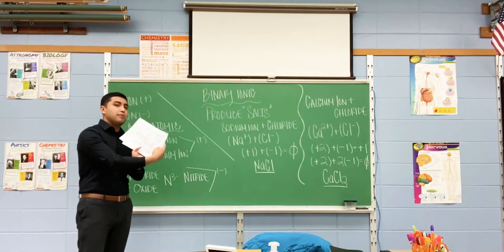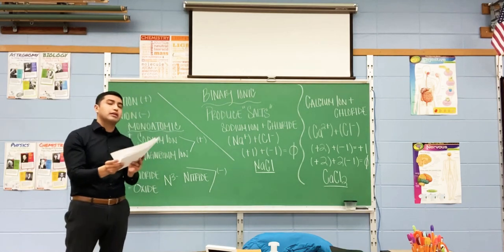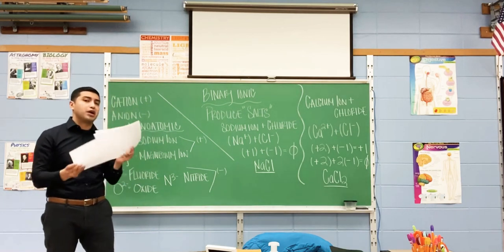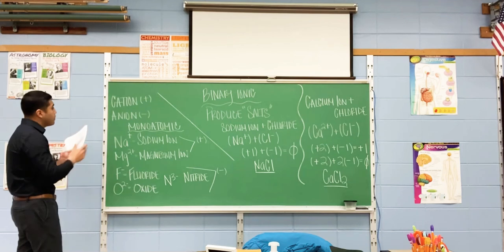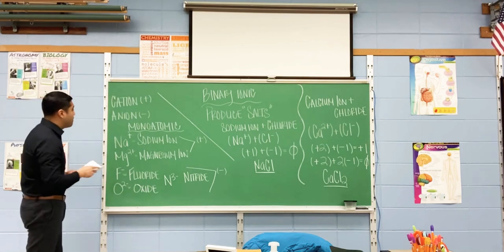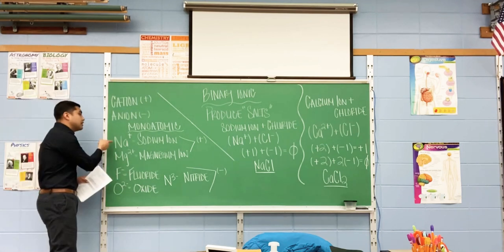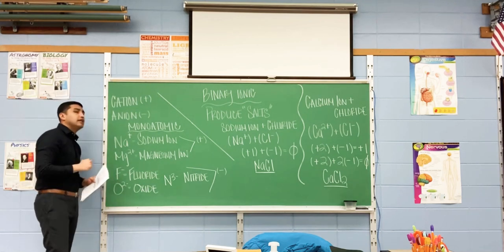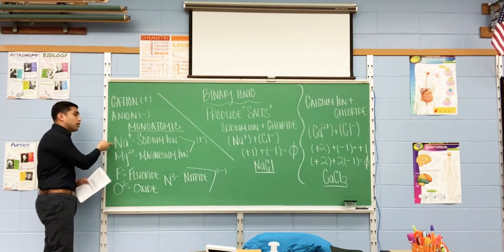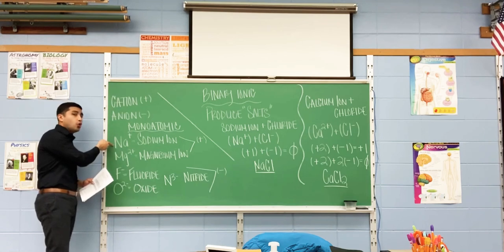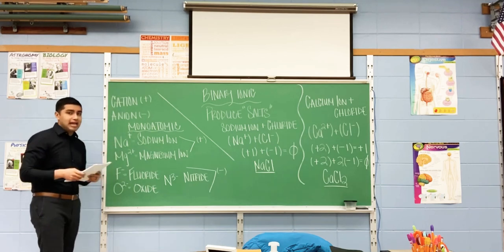Get your periodic table and the chart that has the rows on it — it's important for you to have those out. The first step is to look at the name of the element. In this instance, we are working with sodium, which is Na.